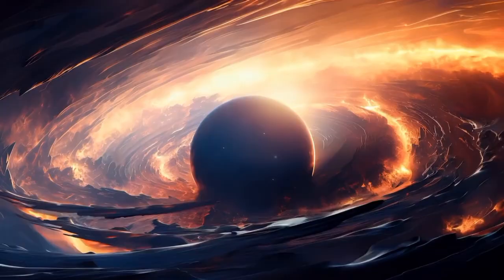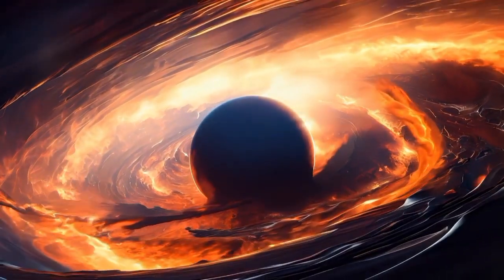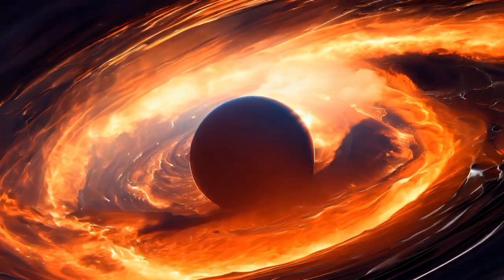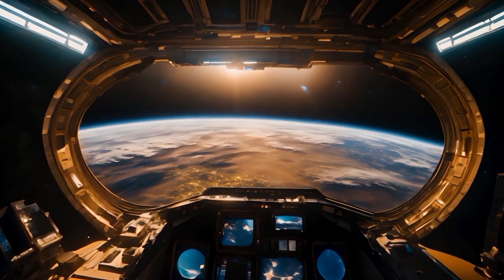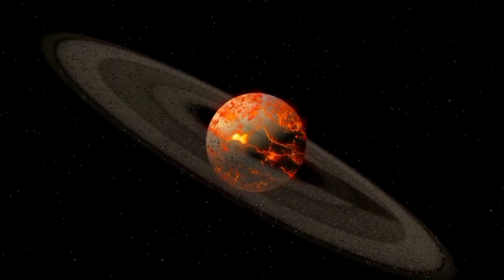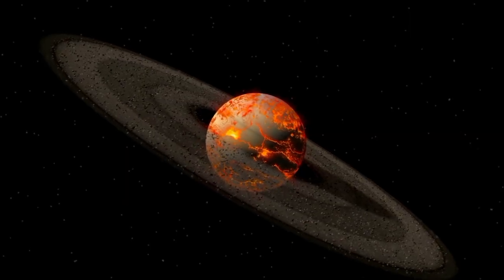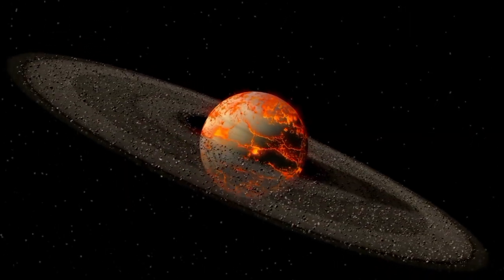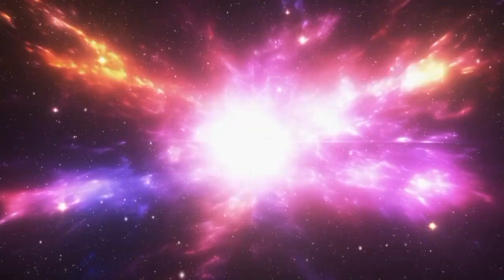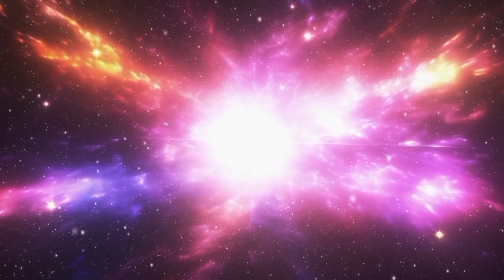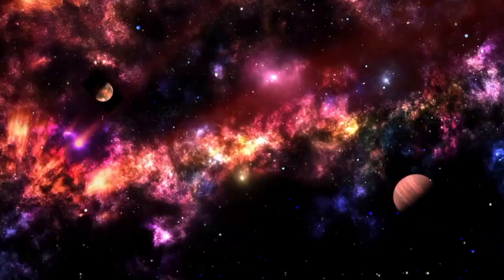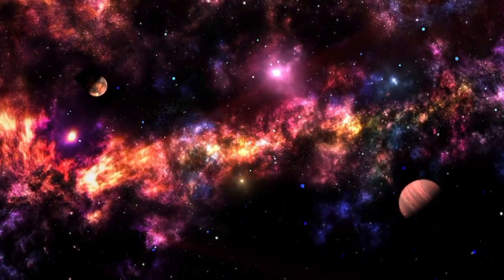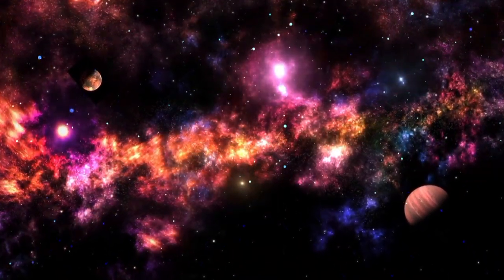To contextualize this, consider the Voyager 1 spacecraft, which was launched in 1977. Traveling at a speed of 38,000 miles per hour, it didn't leave the solar system until 2012. This means that just getting out of our solar system took 35 years. Even light, capable of circumnavigating the globe seven times in one second, seems quite slow in comparison to the vastness of our solar system.